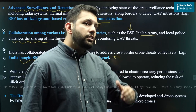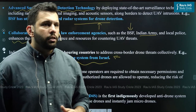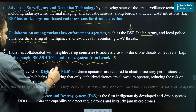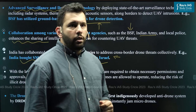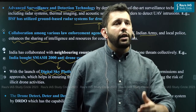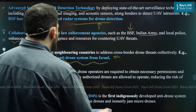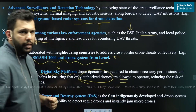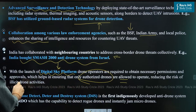Next, to ensure that the security threat from UAVs is completely neutralized, India has launched the Digital Sky Platform initiative. Under this Digital Sky Platform, drone operators are required to obtain necessary permissions and approvals, which helps ensure that only authorized drones are allowed to operate, thereby reducing the risk of illicit drone activities.